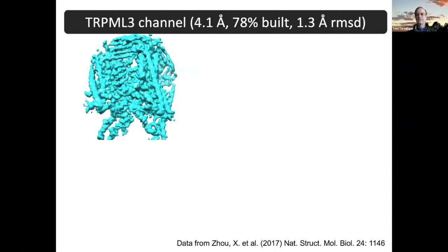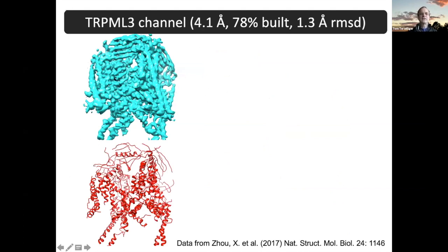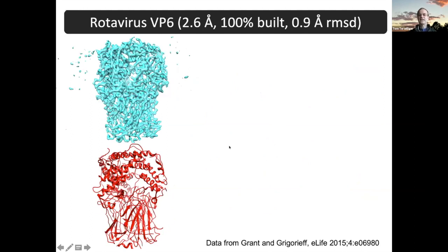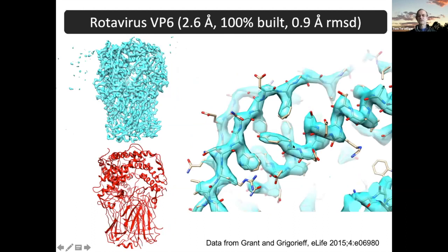Here are a couple of examples. At four angstroms, you get a lot that's right and you get significant mistakes as well. At higher resolution, you get more built. This higher resolution map looks pretty good — you can see where the side chains are, and it tends to build them into the side chains more or less properly. The higher the resolution, the better the model you're going to get. Beyond four angstroms, this will build you something with some things right and some not so good.